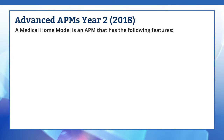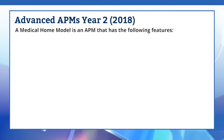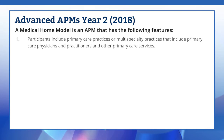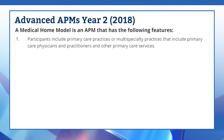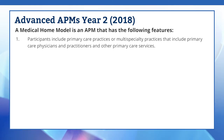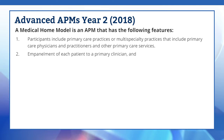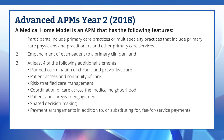In addition to the general nominal risk standard, CMS also finalized a separate definition of a medical home model that only applies to the Quality Payment Program, along with the special financial risk criterion. Per this definition, medical home models that are APMs start with a payer arrangement where the participants are focused on primary care. Participants may also be multi-specialty practices that include primary care physicians and practitioners and other primary care services. They empanel patients to primary clinicians and require a patient-clinician link. There are also 7 model design options that the model can incorporate, of which at least 4 must be met.